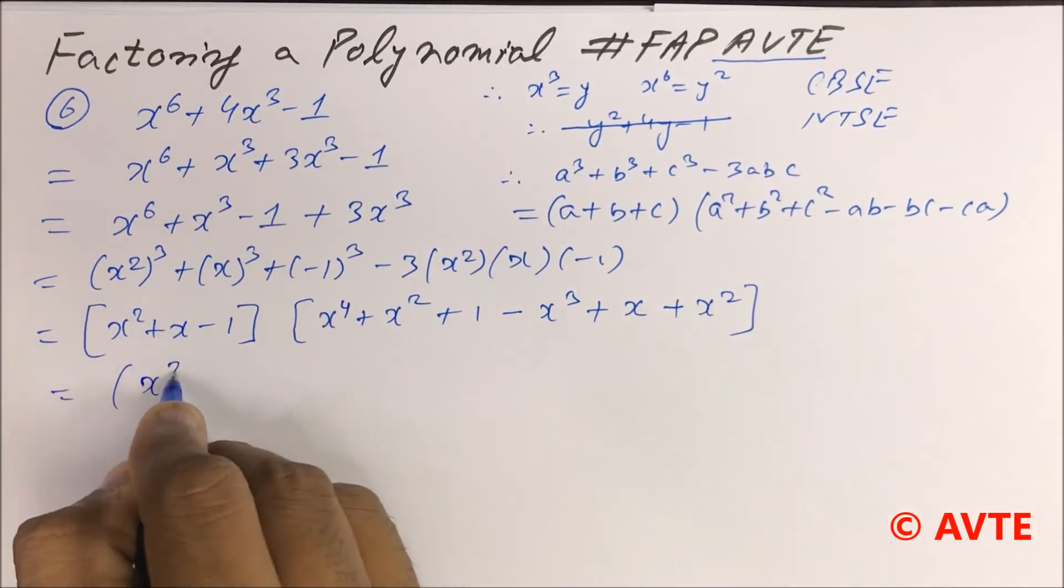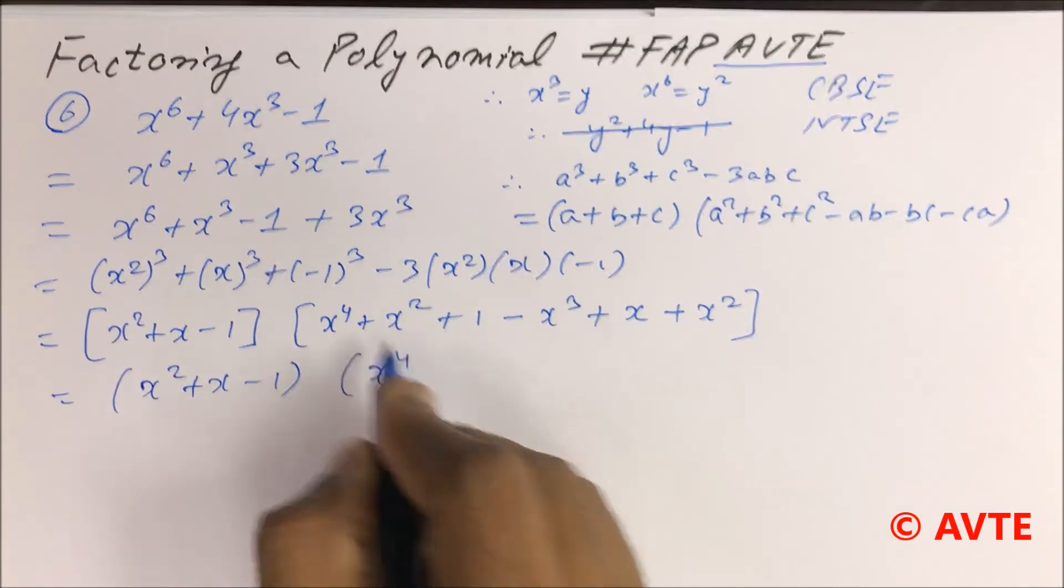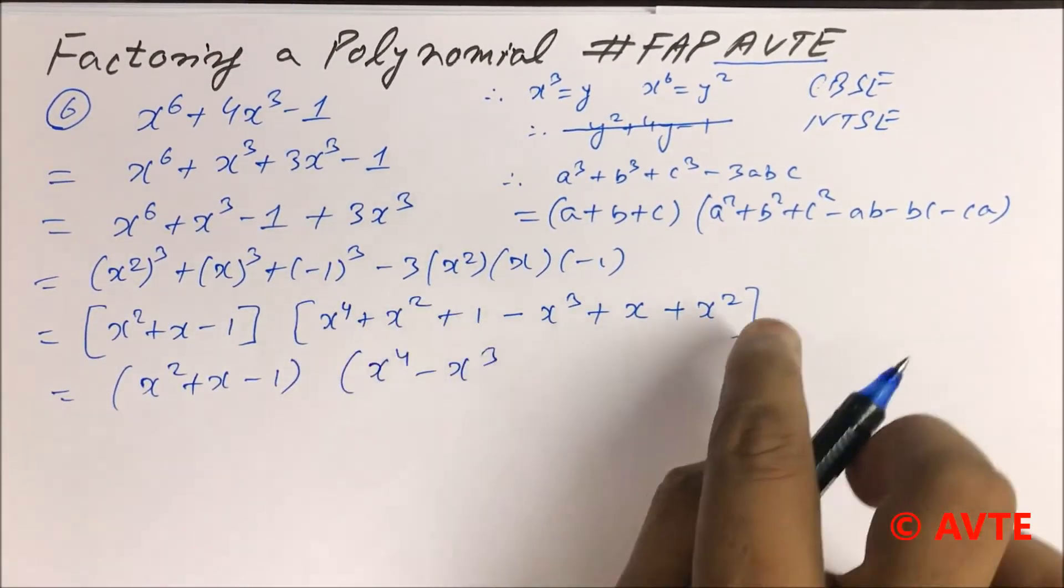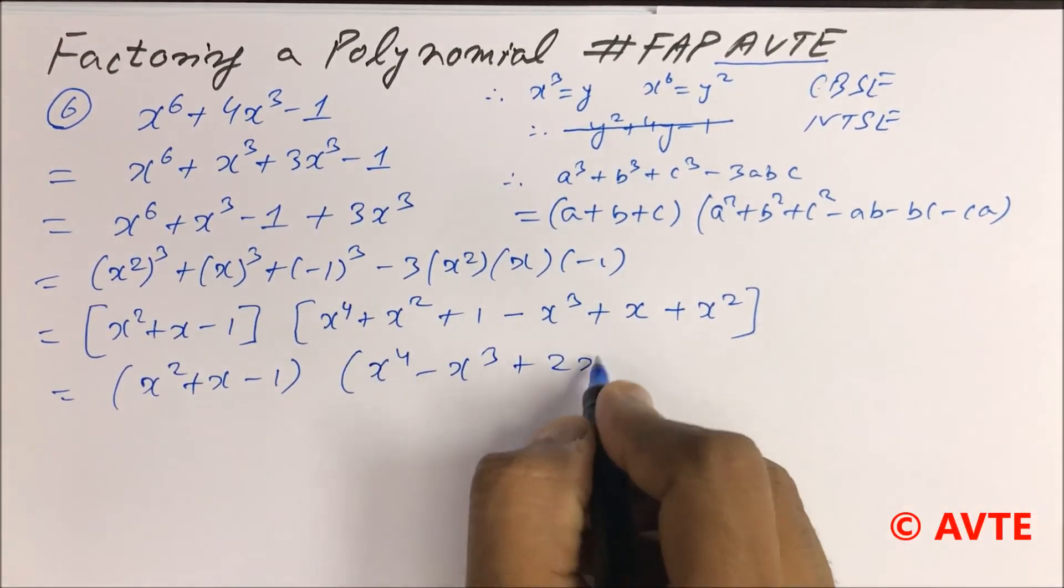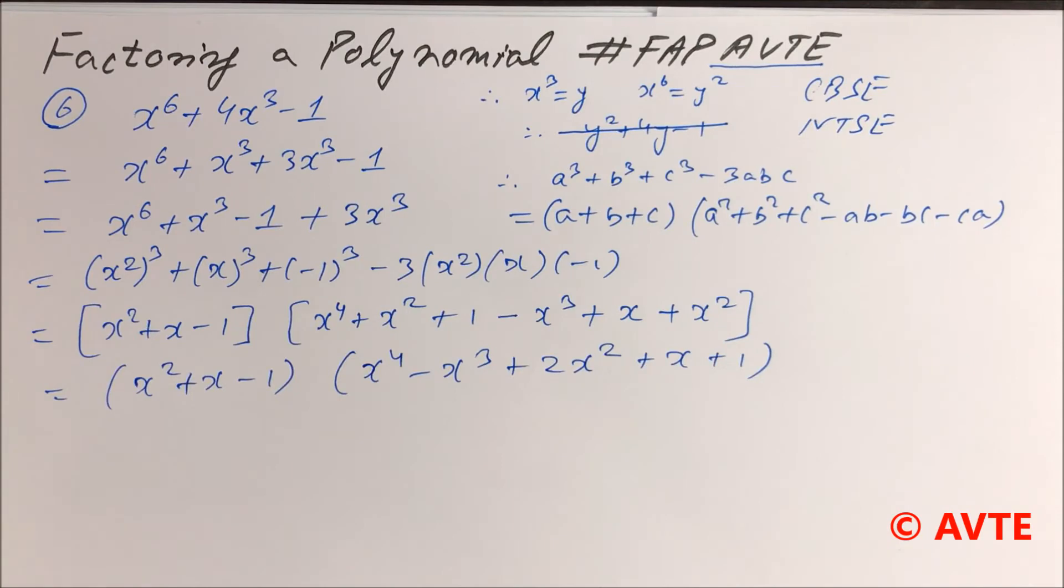So you can check it down: x square plus x minus 1 into x to the power 4. We rearrange it: minus x cube, x square plus x square is 2x square plus x plus 1. This is your final answer.